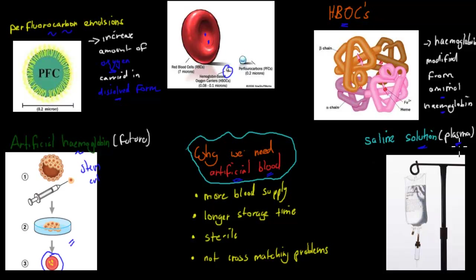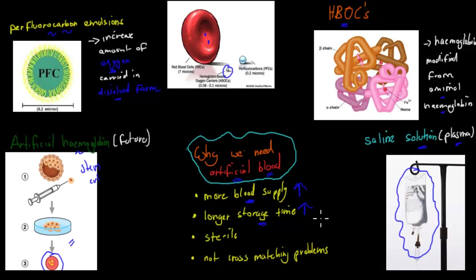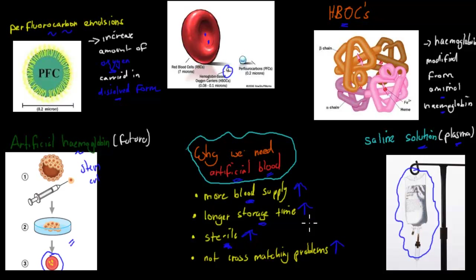We've also got saline solution, which basically replaces plasma. In a hospital you might see these saline solutions — they do similar functions to plasma, and people who are missing plasma will be given saline solutions. The reasons we're working on artificial blood include: it will increase the amount of blood available since we have a shortage at the moment; it will last longer, as natural blood decomposes quickly whereas artificial blood can last a couple of years or months; it's also much more sterile since we don't get it from humans so there's no risk of disease transmission; and we have no problem with cross-matching blood groups, avoiding potentially fatal mismatches.